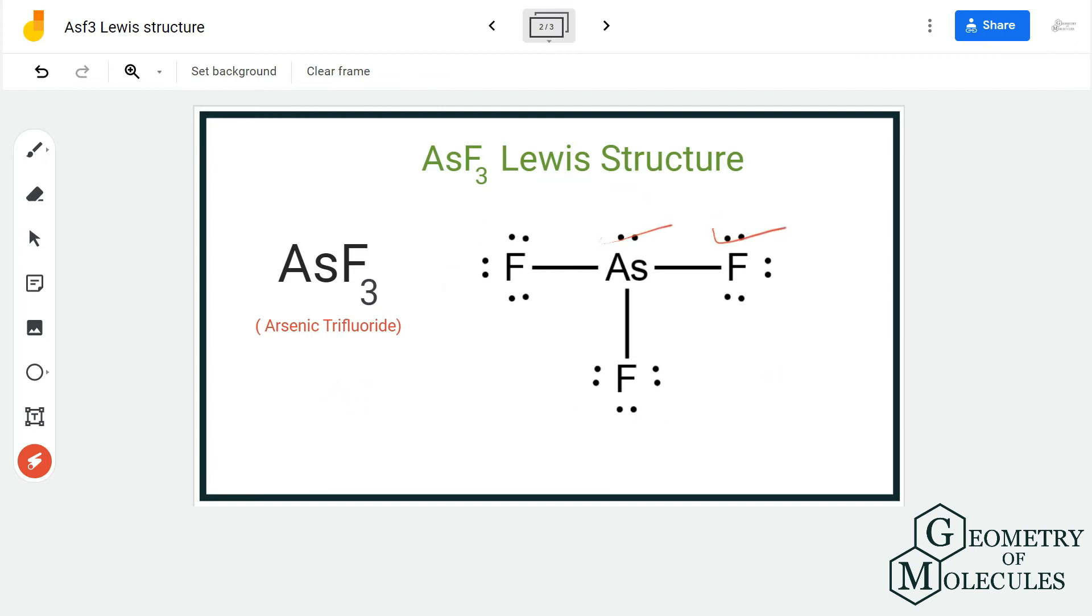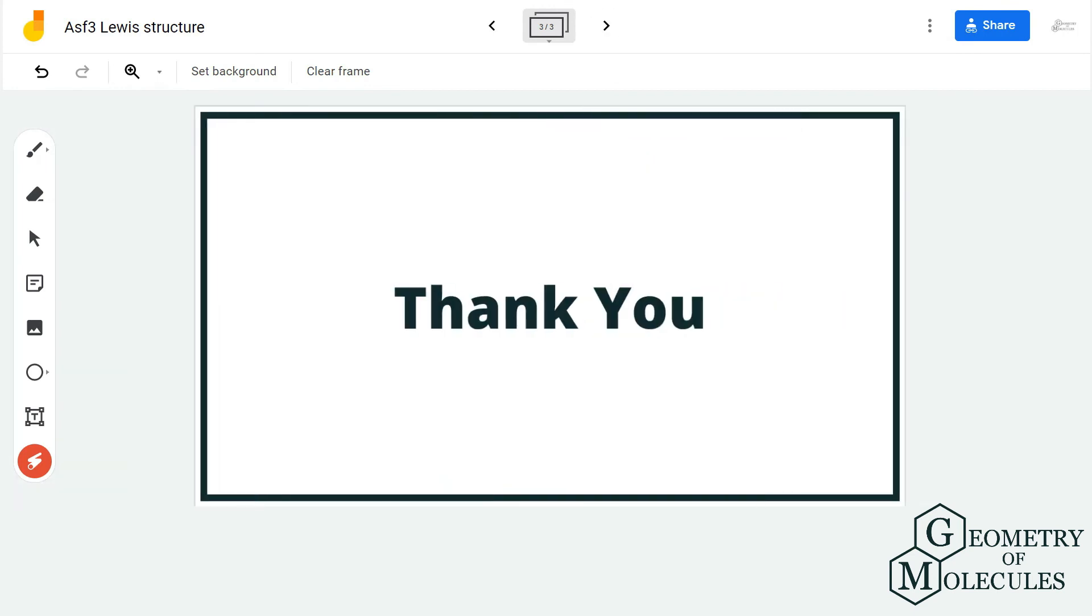So this is the Lewis structure of arsenic trifluoride, in which there are three single bonds formed and there is a lone pair of electrons on the central arsenic atom. I hope this video helps you to understand the Lewis structure for AsF₃.